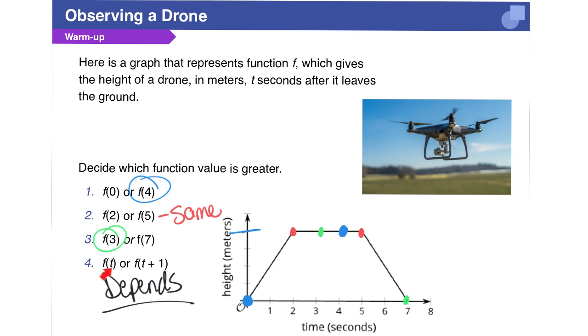And then number 4, f of t is just talking about at any time in seconds, and f of t plus 1 just means the next second. And so I said it depends, because in this part, the next second is higher. In this part, the next second coming after it is the same. And in this part, the next second coming after is lower.